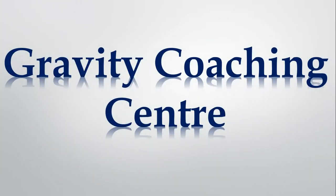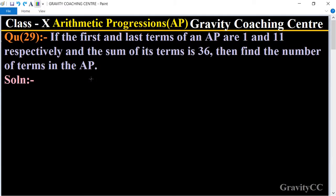Welcome to our channel, Gravity Coaching Center. Class 10, chapter Arithmetic Progressions, question number 29. If the first and last terms of an AP are 1 and 11 respectively, and the sum of its terms is 36, find the number of terms in the AP.